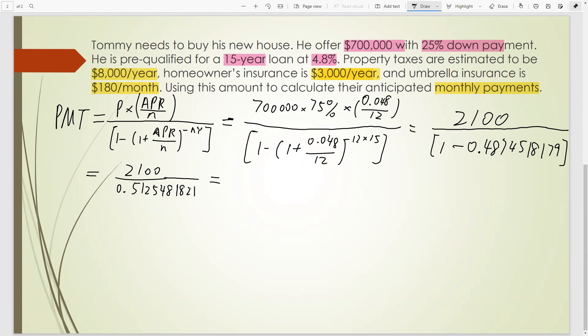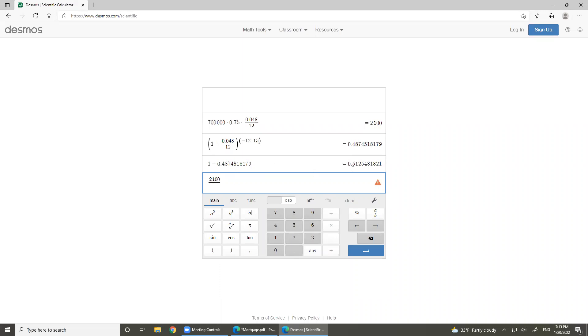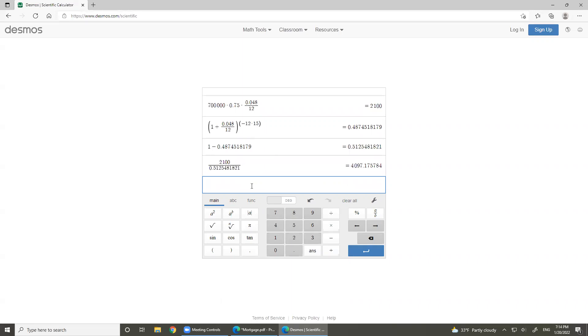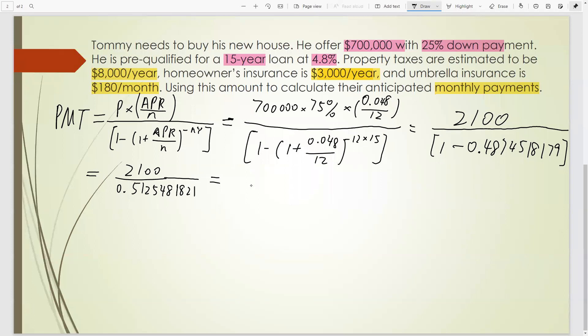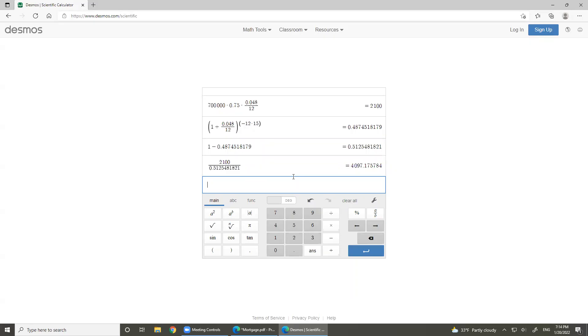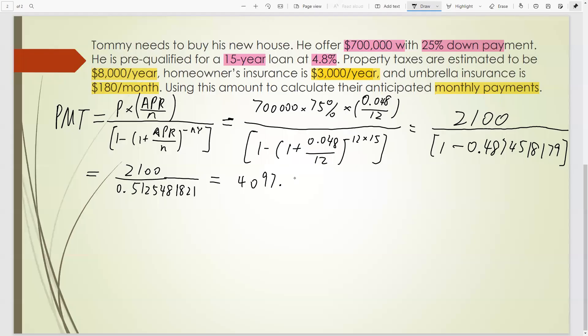Okay, then 2,100 divided by, that's 4,017,175,784. That will be most accurate, we leave answer like that because we need to find the total monthly payment at the end. If we're rounding this step, maybe the total monthly payment will be a little not that correct. All right, so that's the mortgage payment.